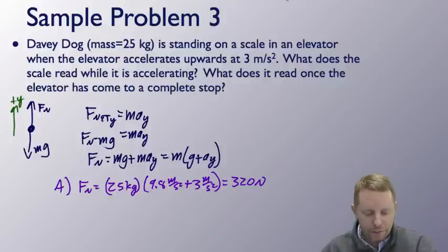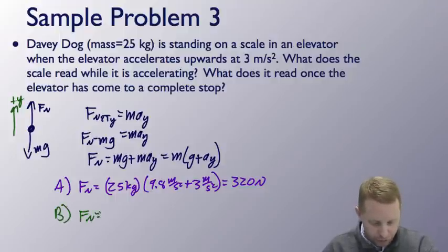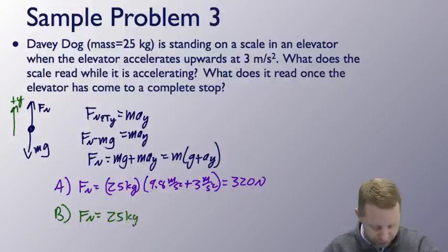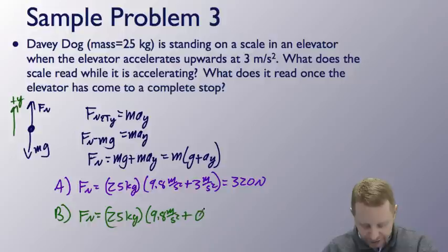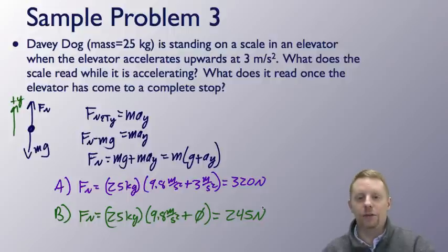For part b, what does the scale read once the elevator has come to a complete stop? Normal force equals m times (g plus a y), with m still 25 kilograms, g equals 9.8 meters per second squared, but it's not accelerating so a y equals zero. This is just the weight of the dog: 245 newtons.